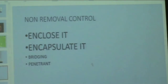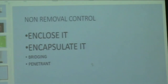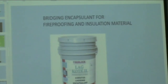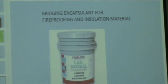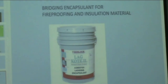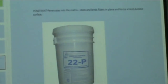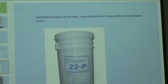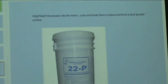Getting back to enclosing and encapsulating: enclosing means taking a pipe loaded with asbestos and adding bricks around it — out of sight, out of mind. Encapsulating uses certain liquids. One is a bridging encapsulant, which closes the molecules of the asbestos together and makes a tight fit. We also have a penetrant, which penetrates into the matrix, coats and binds fibers in place, and forms a hard, durable surface.